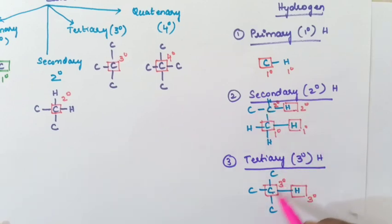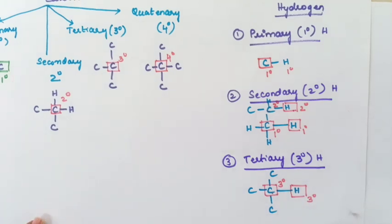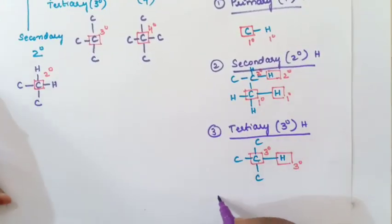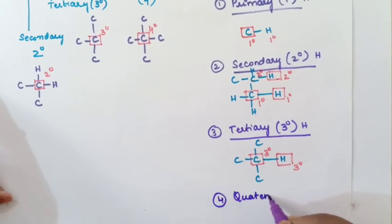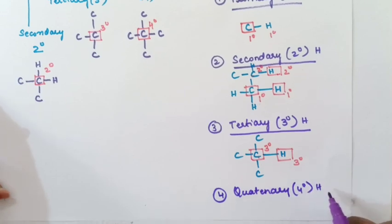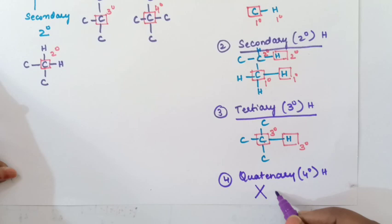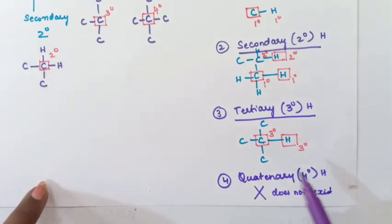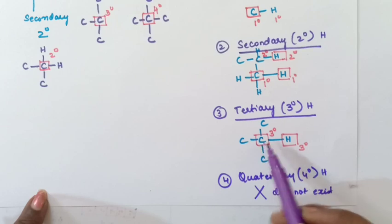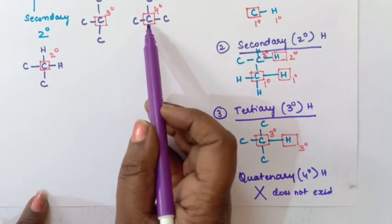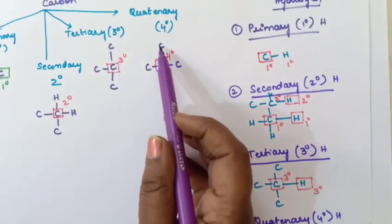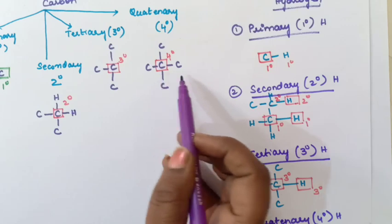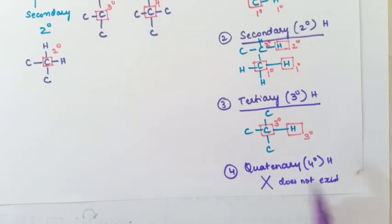You may ask whether quaternary hydrogen exists. The fourth type, quaternary hydrogen, does not exist. Why? Because quaternary carbon is already connected to four carbons with four bonds, and carbon can only have four bonds. So there is no room to connect one more hydrogen atom — therefore quaternary hydrogen does not exist.